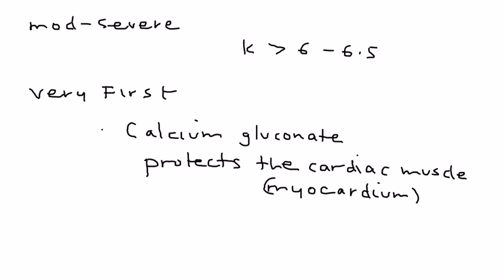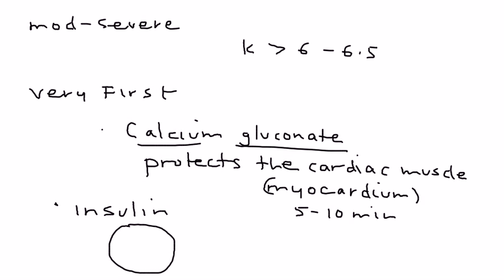Within five to ten minutes, giving calcium gluconate will help the patient. The next thing you need to do is give insulin. Why insulin? Insulin helps to shift potassium from the extracellular space into the cells, and when you do that, you normalize the potassium in the bloodstream.